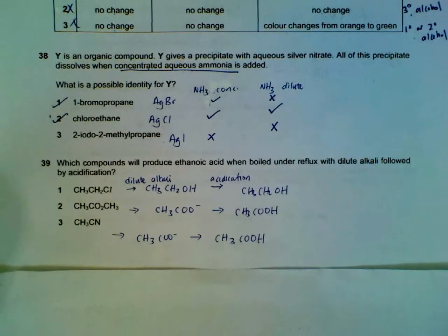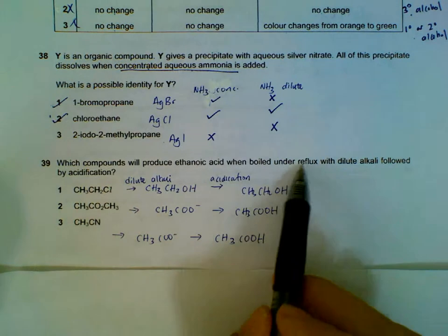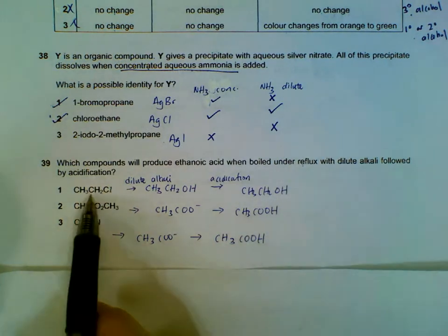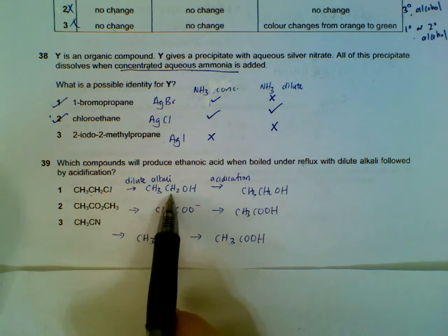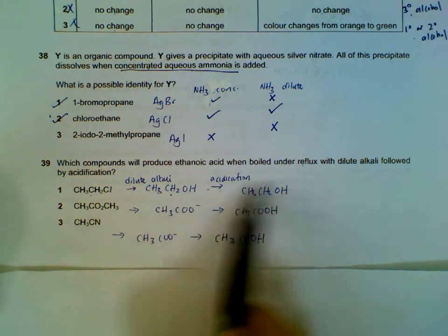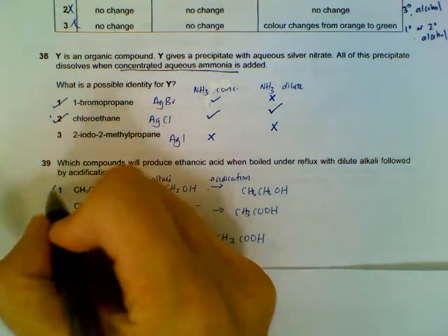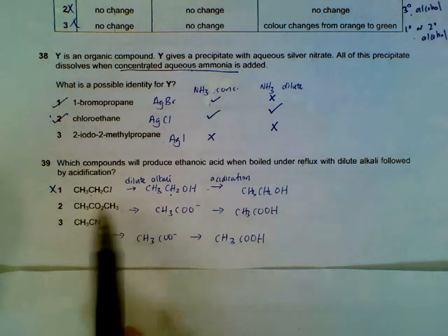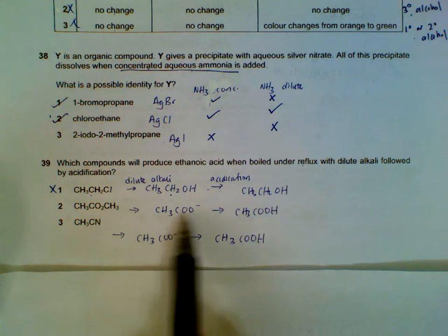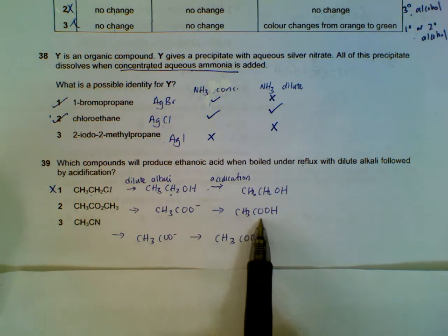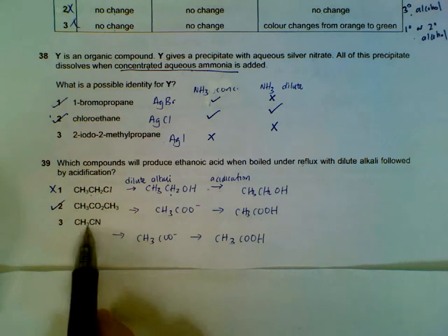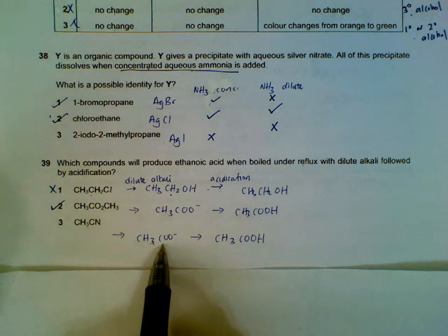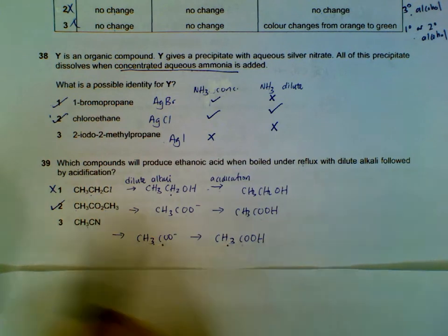Question 39: which reactions give ethanoic acid on boiling under reflux then acidification? For a haloalkane boiled with sodium hydroxide, you get an alcohol — so that's out. For an ester boiled with sodium hydroxide, you get the carboxylate salt; acidification then gives ethanoic acid. For a nitrile, alkali hydrolysis gives CH3COO⁻, and acidification gives CH3COOH. So esters and nitriles both work.